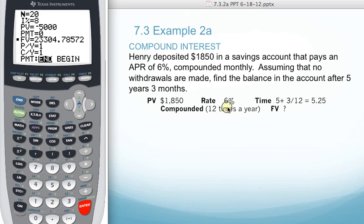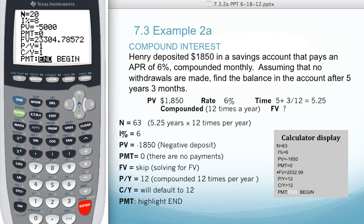And compounding is monthly, so that would be 12 times a year. We want to determine our future value. If you are already on the TVM solver, you can actually start and input your values here. But first, let's look at how you get to here and how you get out of it.